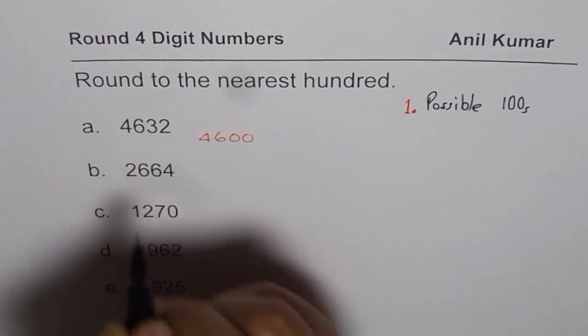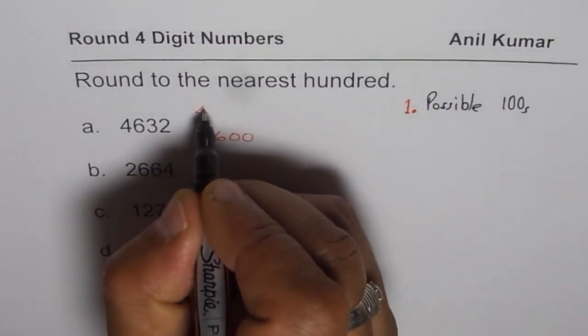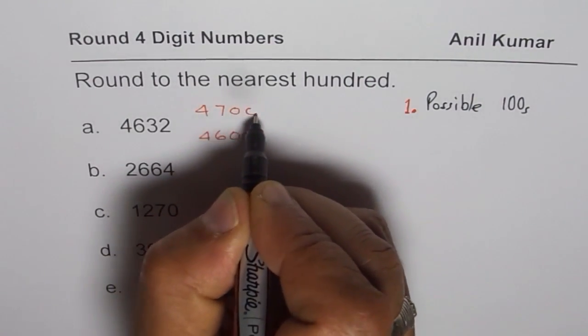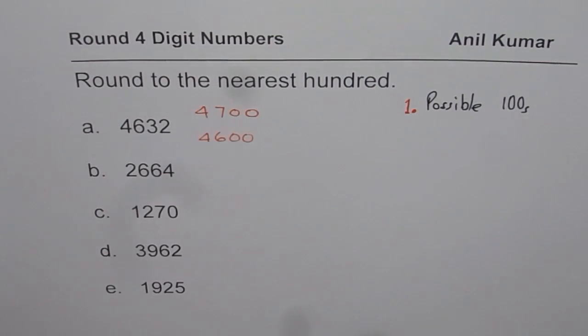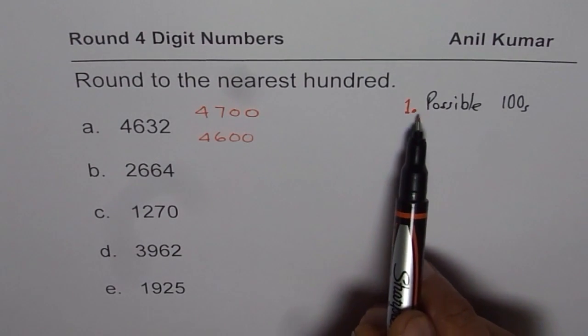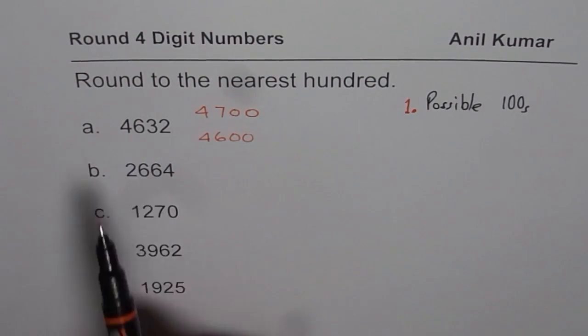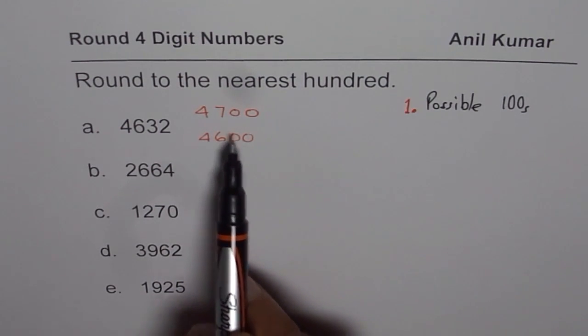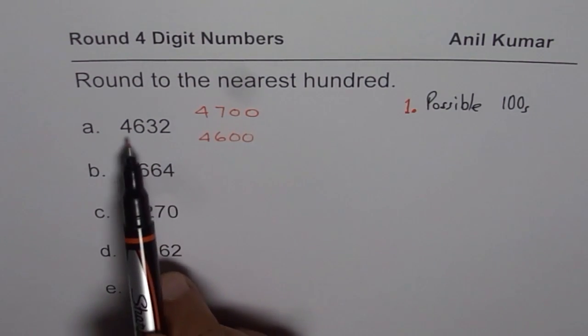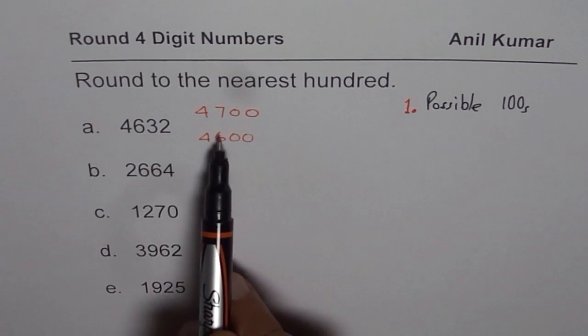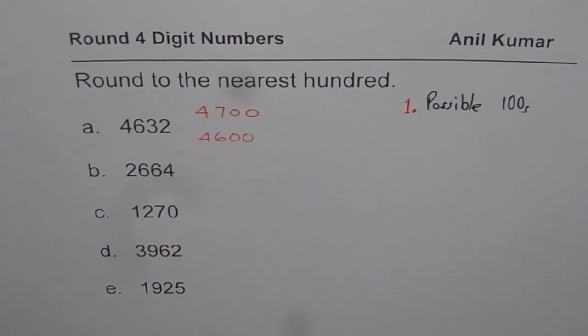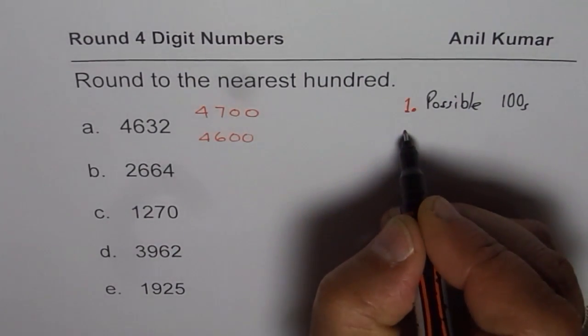4,632 is between 4,600 and 4,700. So we have possible hundreds for this number: 4,600 or 4,700. 4,632 is between these two hundreds. That is what I am trying to say.